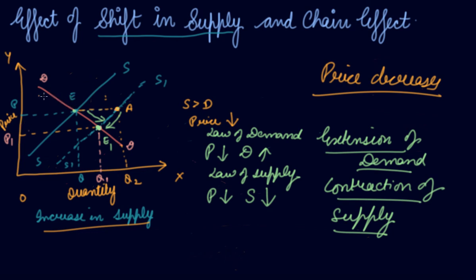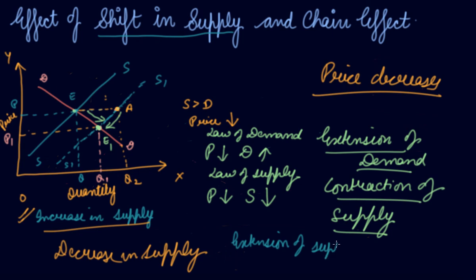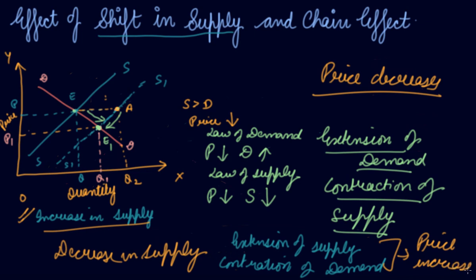With decrease in supply, your price increases. So this is how you explain the decrease in supply — there will be extension of supply and contraction of demand due to the price rise. You will have the new equilibrium at a higher price and lower quantity. This is the chain effect and the effect of shift in supply.